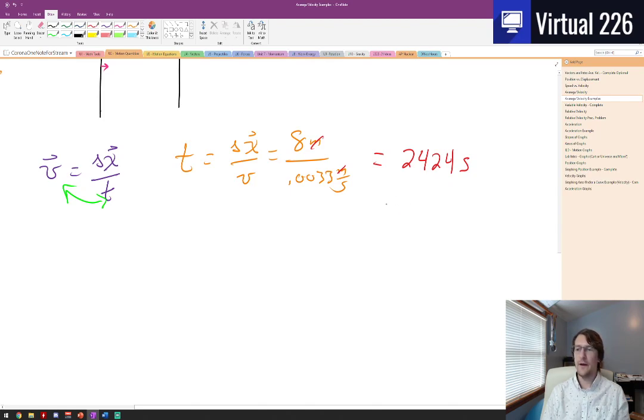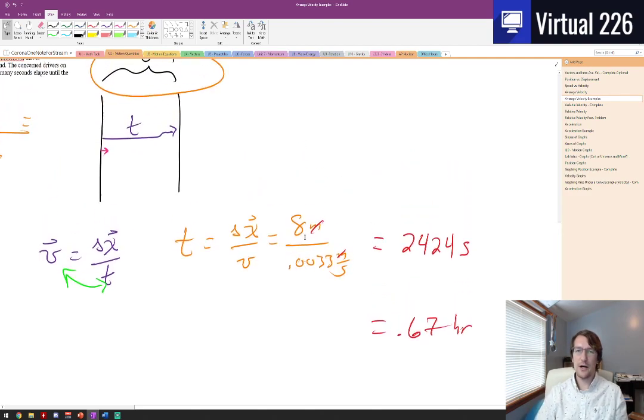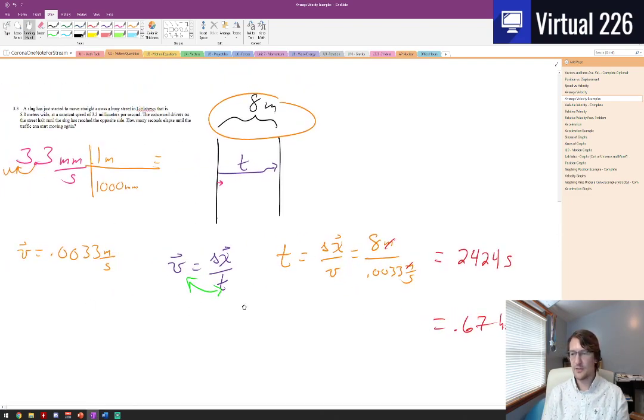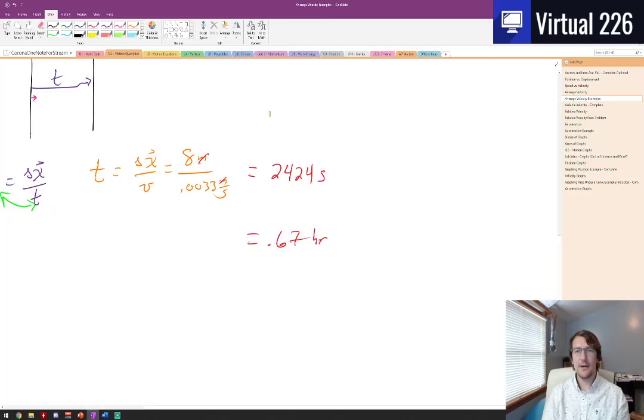Super awesome, which is like two thirds of an hour just about. If we wanted to convert that into hours we could just divide it by 3,600, and it's about 0.67 hours, so just about 40 minutes or so. We'll get the slug onto the other side of the street. So not too bad of a problem, just recognizing what we have here, some distances, some velocities, a quick little conversion, and then solving that out. And with that this problem is finished, take it easy.